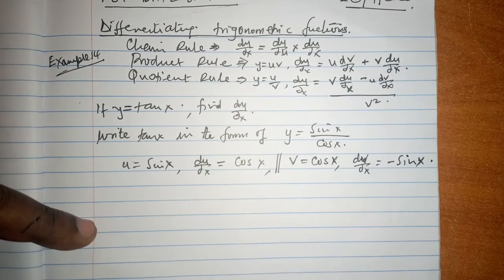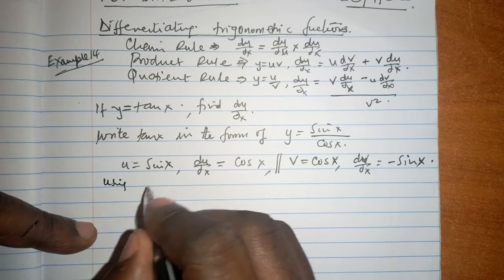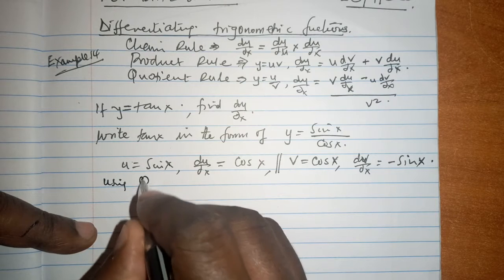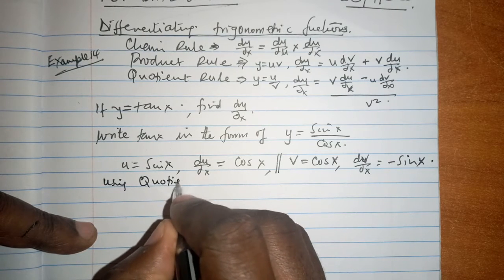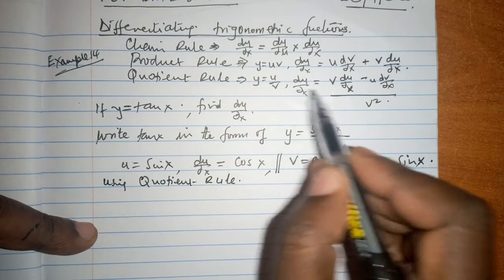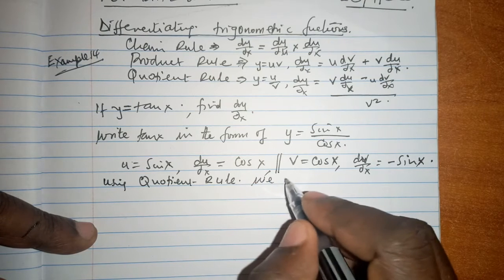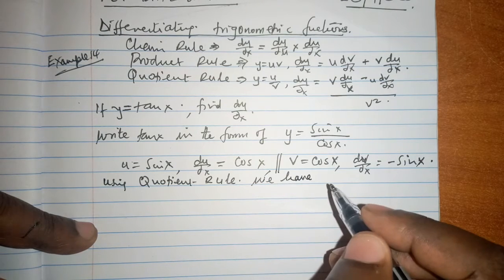Now at that particular point we can apply, we can say using the quotient rule, which is over there, using the quotient rule, which is the third one, we have using the quotient rule, we have...